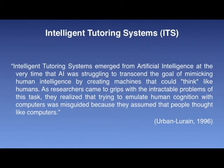As researchers came to grips with the intractable problems of this task, they realized that trying to emulate human cognition with computers was misguided, because they assumed that people thought like computers. The resulting crisis provoked a reassessment of AI's goals, allowing researchers to begin making progress in areas such as expert systems. Expert systems research was productive because it concentrated on systems that were useful in their own right, rather than attempting to create thinking machines.